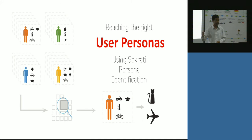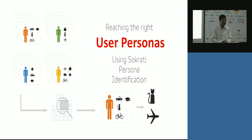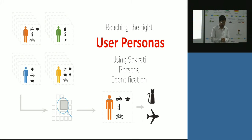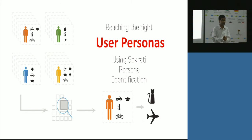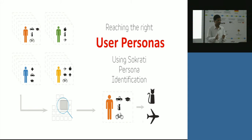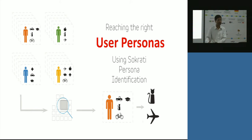On Google Display Network or other display networks, you can target by interest, by the context of the page, by the interest of the user. Gmail sponsored ads allow you to target based on what's in your inbox. What we do at Socrati is simplify this into user personas. We have something called Socrati Persona Identification where we use a combination of intuitive correlations and hard data from cookies — this interest corresponds to this intent, and hence we make conclusions on what that person would buy. We at Socrati are always on the advertiser side, so we never share cookies. It's only for that advertiser.